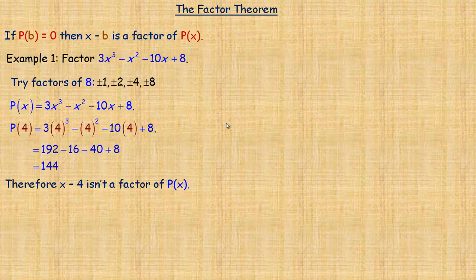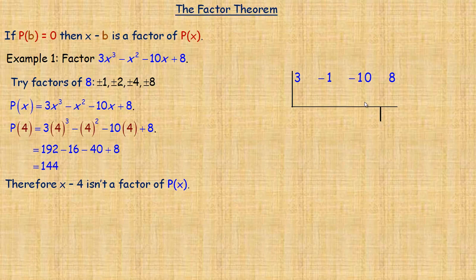When I try to factor, I often just use synthetic division, and I'm going to show you something on the next page to speed this process up. If you don't have that option, it's really just trial and error. We already showed that 4 didn't work. One of the nice things about synthetic division is that once you get a remainder of 0, you can continue the division on and on — you can't do that with long division.